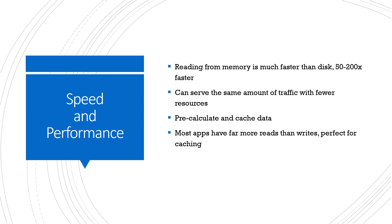Another benefit is that you can pre-calculate and cache data in advance. This is something Twitter does with their timelines — they know users want their timeline fast, so they occasionally pre-compute it, maybe 200 tweets, and push that data to cache so they can serve it very quickly. Instead of going to the database every time and running their algorithm to get your newsfeed, they pre-calculate it and can serve it within milliseconds rather than waiting a couple seconds.